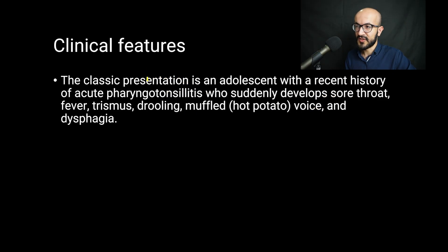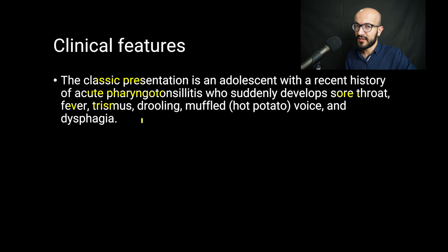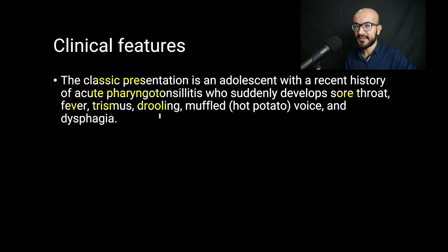Regarding clinical features, the classical presentation is an adolescent with a recent history of acute pharyngeal tonsillitis who suddenly develops sore throat, fever, trismus which is inability to open the mouth, and drooling of saliva. This occurs when the patient is tachypneic — they are breathing fast and don't have time to swallow their saliva. They may also present with muffled hot potato voice and dysphagia.